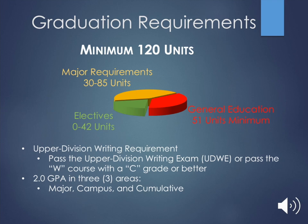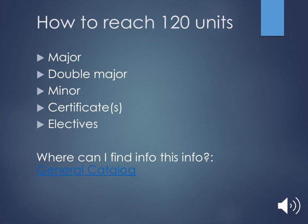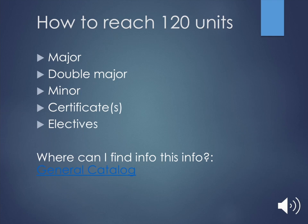How do you reach those 120 units? As we talked about, your major — you want to complete your major, depending on whether you're a double major, have a minor, certificates, or electives. Where you can find this is in your general catalog. You want to make sure you know your general catalog because a lot of that information is there. It gives you the opportunity to do the research first, then come in and meet with an advisor or your major department advisor. The general catalog has majors, double majors, minors, certificates, and electives — a lot of great opportunities to understand what we offer here at Fresno State.